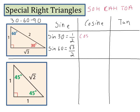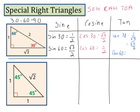Continuing with cosine and tangent for the 30-60-90 triangle: cosine of 30 is adjacent over hypotenuse — the adjacent to 30 is square root of 3, hypotenuse is 2. Cosine of 60: the adjacent to 60 is 1, hypotenuse is 2. For tangent of 30 — opposite over adjacent — that gives 1 over square root of 3, which we rationalize to square root of 3 over 3. The tangent of 60 equals square root of 3 over 1, or just square root of 3.